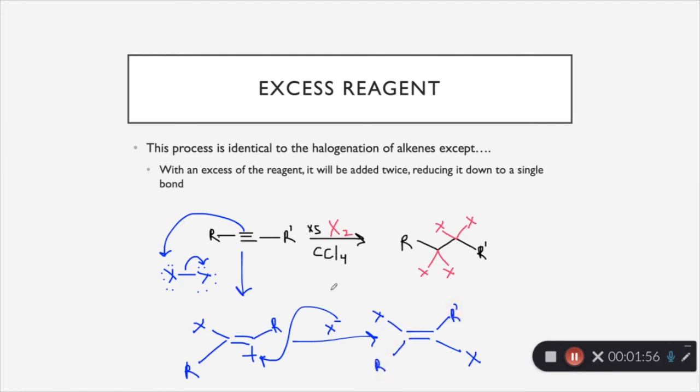This would be if we did not have an excess of reagent and we just added it one time to that triple bond. But, if we do have an excess of reagent, like we say here, this whole process would be repeated with this double bond and that is how we would get this single bond right here.